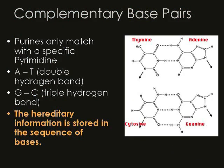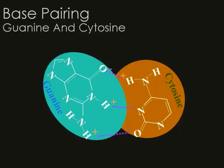Base pairs pair up in very specific ways, which will be very important when we talk about replication and transcription. Purines only match with a specific pyrimidine — adenine only matches with thymine with a double hydrogen bond, and guanine only matches with cytosine with a triple hydrogen bond. The hereditary information is stored in this sequence of bases. Notice how the hydrogen bonds line up for guanine and cytosine — this is the only way they fit correctly on the rungs of DNA.